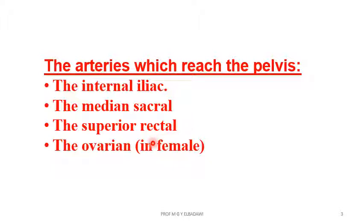The ovarian artery is a branch of the abdominal aorta at the level of the third lumbar. It descends in front of the psoas major to reach the suspensory ligament of the ovary, supplying the ovary, uterine tube, and anastomosing with the uterine artery. That is the ovarian artery.